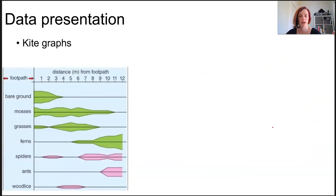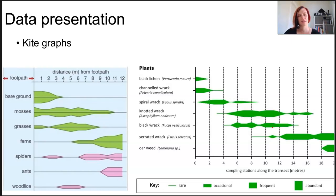Kite graphs are really interesting because they show spatial changes along the transect. They're really effective ways to show distribution and abundance. That's what they're there for, and it's along that gradient. It might be distance from a footpath, so you might be talking distance from a disturbance.